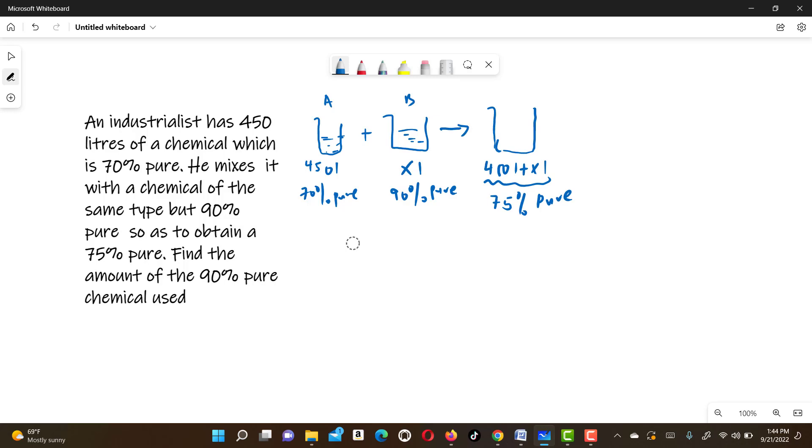So we need to get what is pure. This is how we are going to tackle this question. The liters of chemical A which are pure plus the liters of chemical B which are pure will give us the 75% pure in the two chemicals.